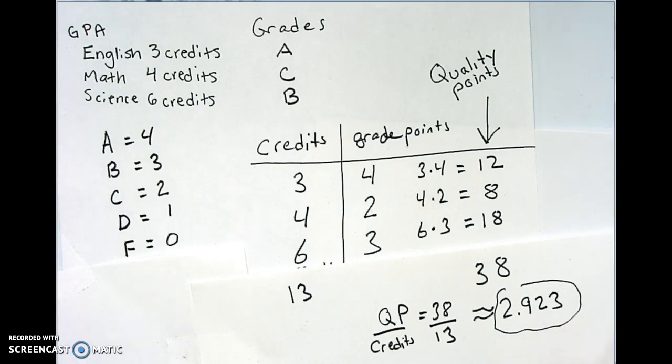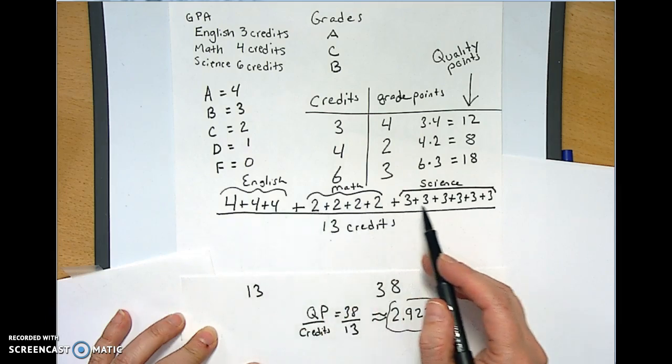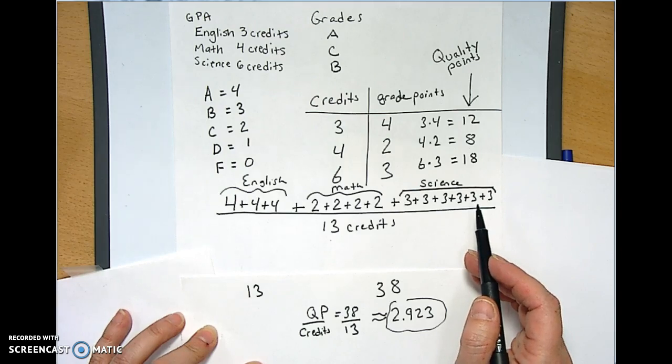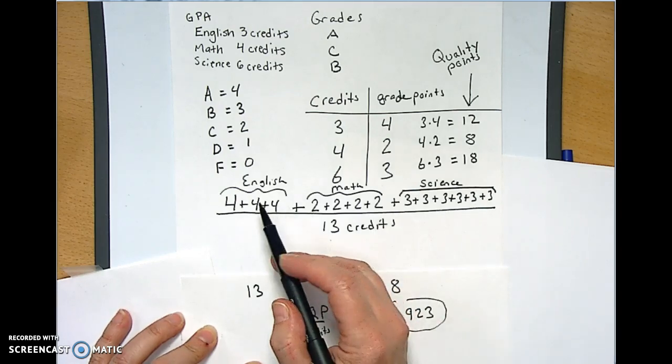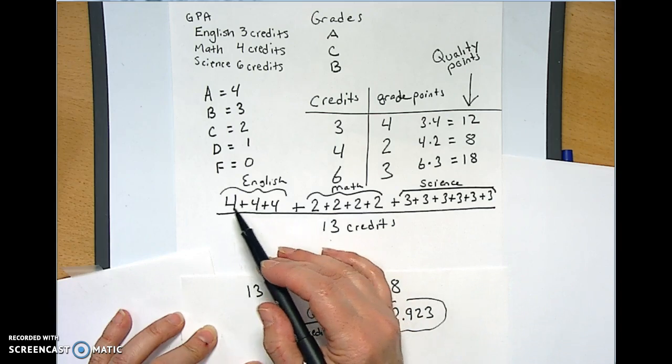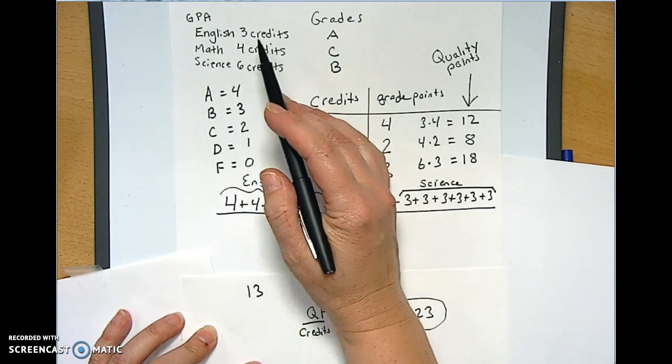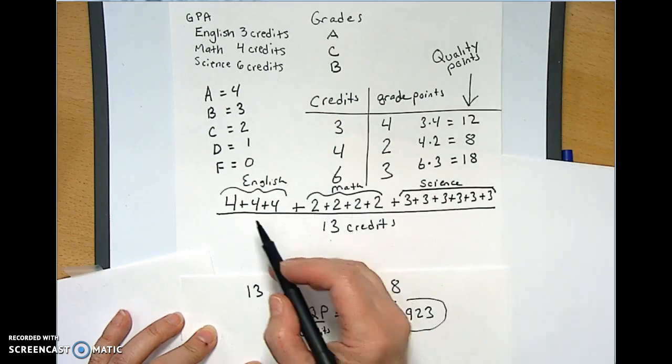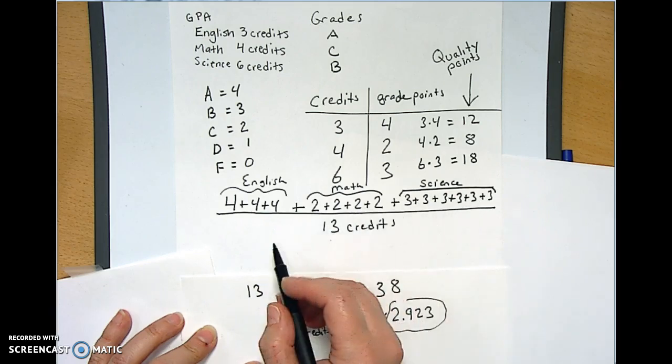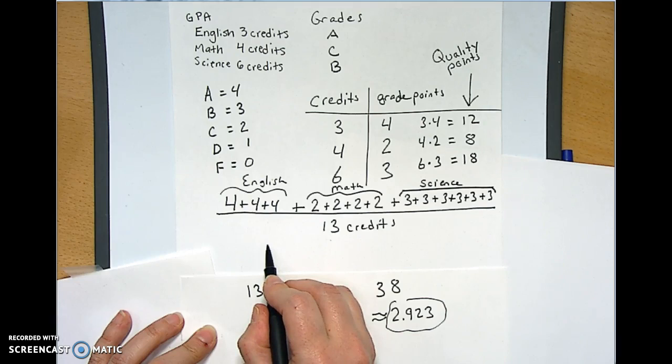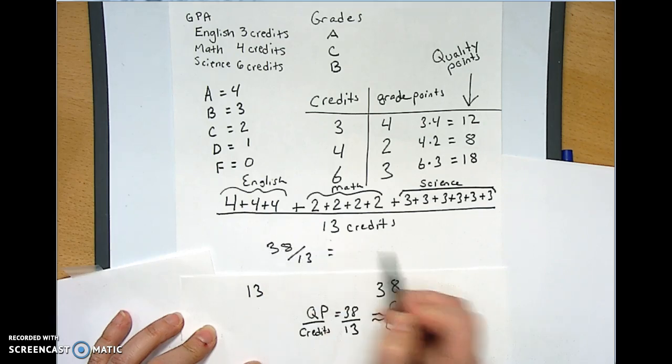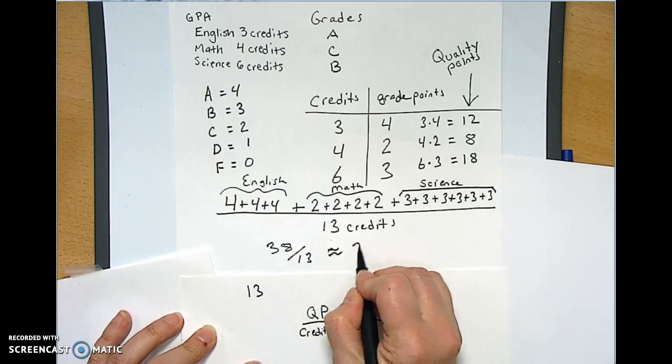I think that's all we really need to say about GPA. I do want to show you one more thing really quick. I stopped this one earlier because it was just so annoying and juvenile, but I feel like we need to make sure it does the same thing. I think it should make sense to everybody that this is four plus four plus four because English was three credits. So that's like three chunks of four and math being four credits. So I just want to add these up really quickly and show you that this is the same thing. 38 divided by 13 and you still get around 2.93.